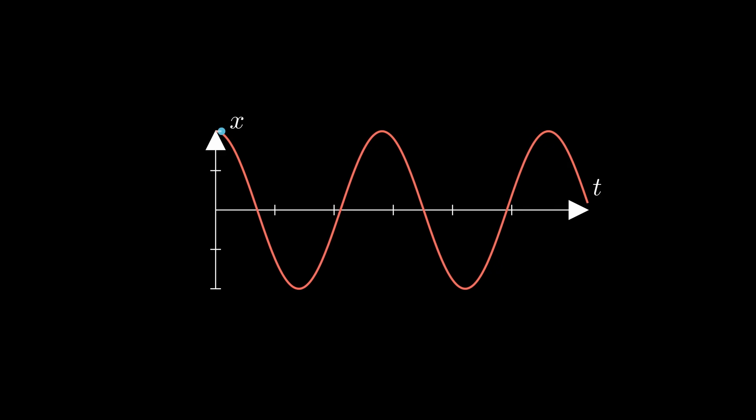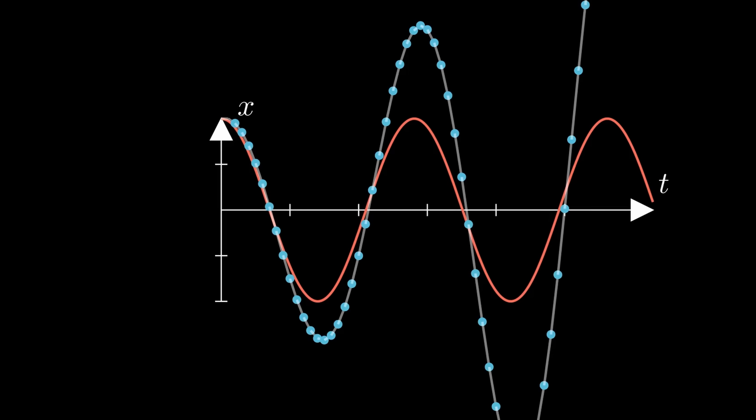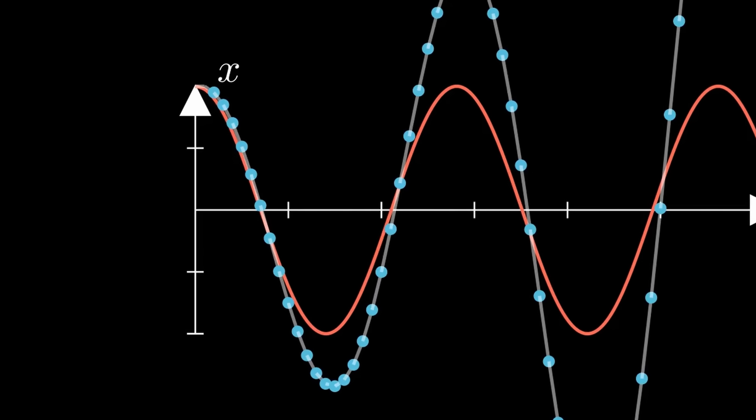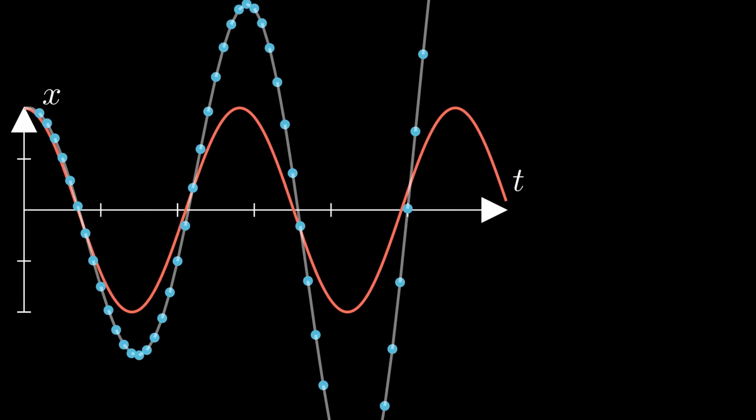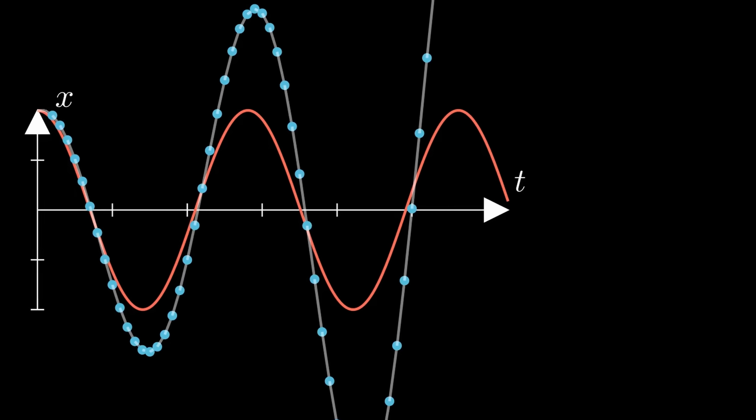If we then continue iterating, hopefully—uh oh. You can see in the beginning the approximation is actually really good, but as you can see, as time increases, accuracy decreases greatly. Now this is a general issue with any approximation scheme, but there's actually something else going on here as well. Notice that the amplitude of the approximation grows over time, even though our system is closed.